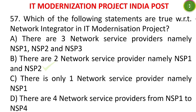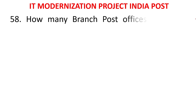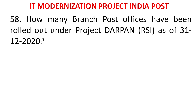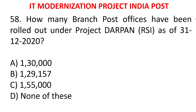NSP1 is BSNL and NSP2 is CFFE. MCQ 56: How many branch post offices have been rolled out under RSI as of 31-12-2020? Options: 1 lakh 30,000; 1,29,157; 1,55,000; 1 lakh 55,000; or none of these.